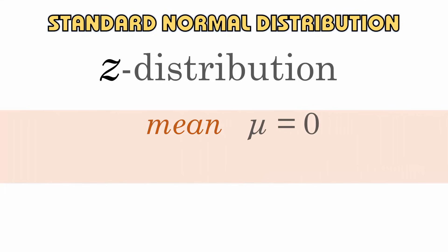The standard normal distribution, or what is also called the Z-distribution, is a special normal distribution with a mean mu of 0 and a standard deviation sigma of 1.